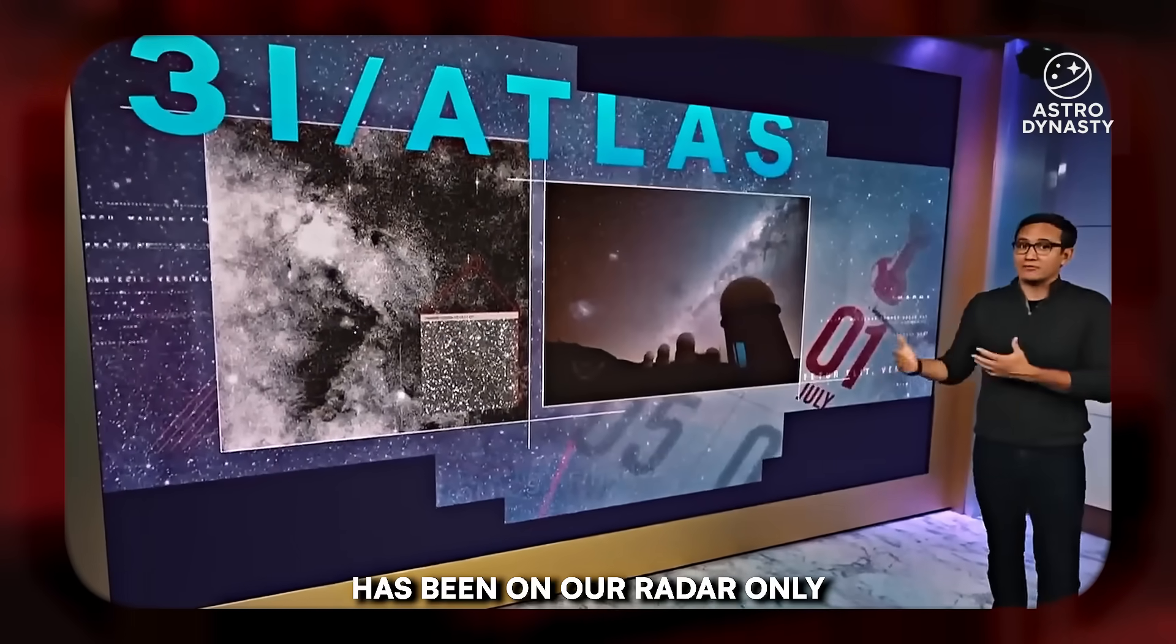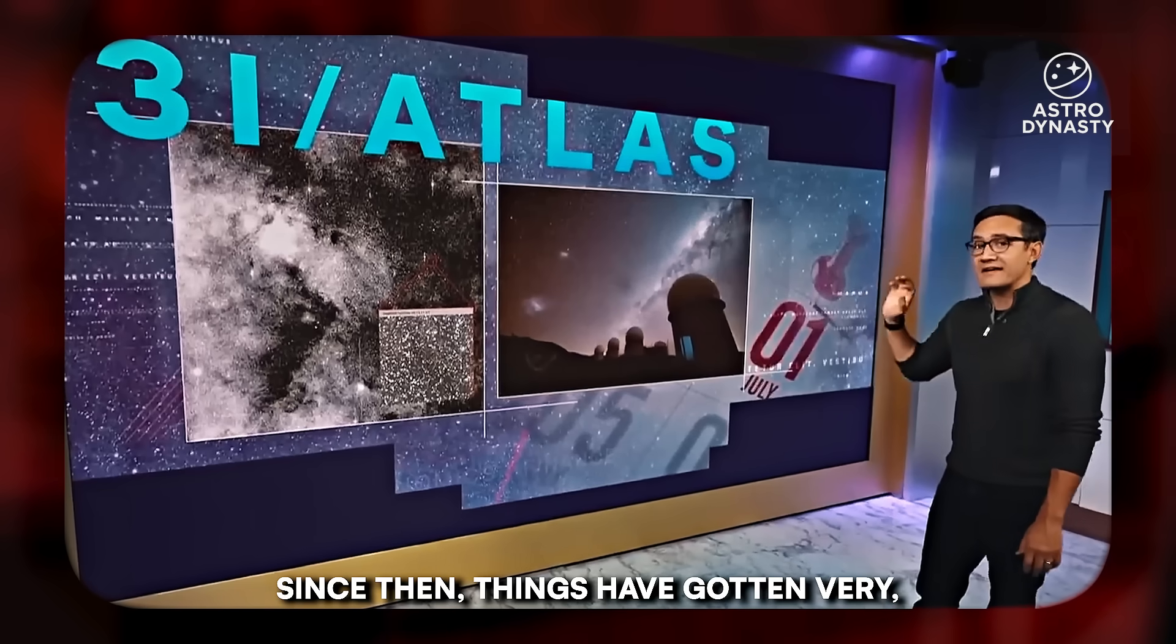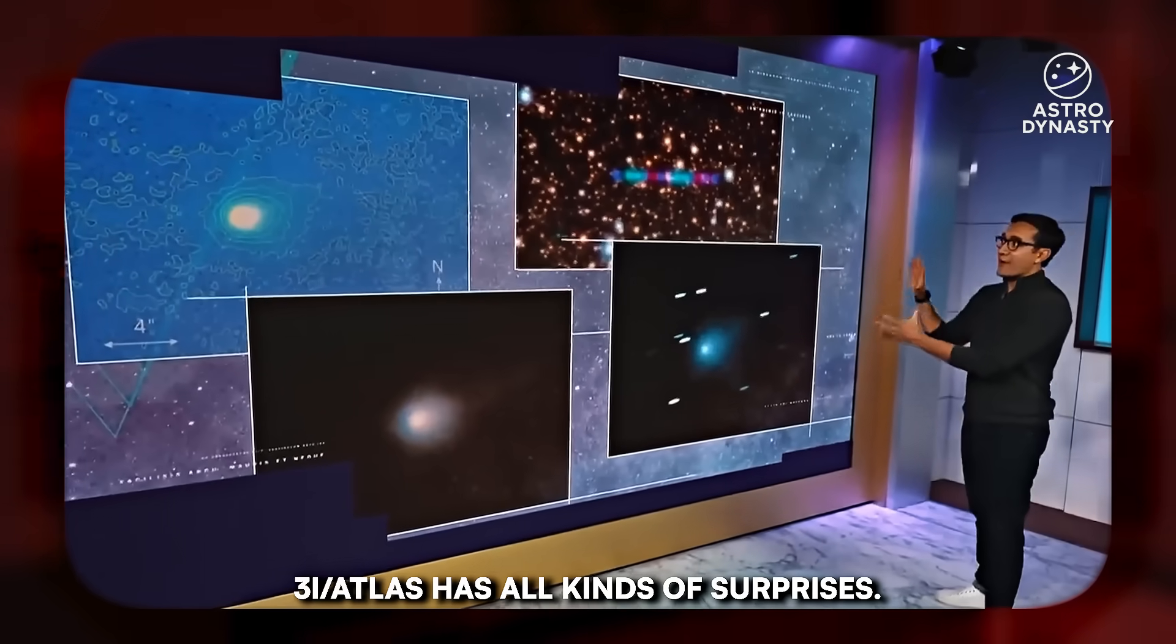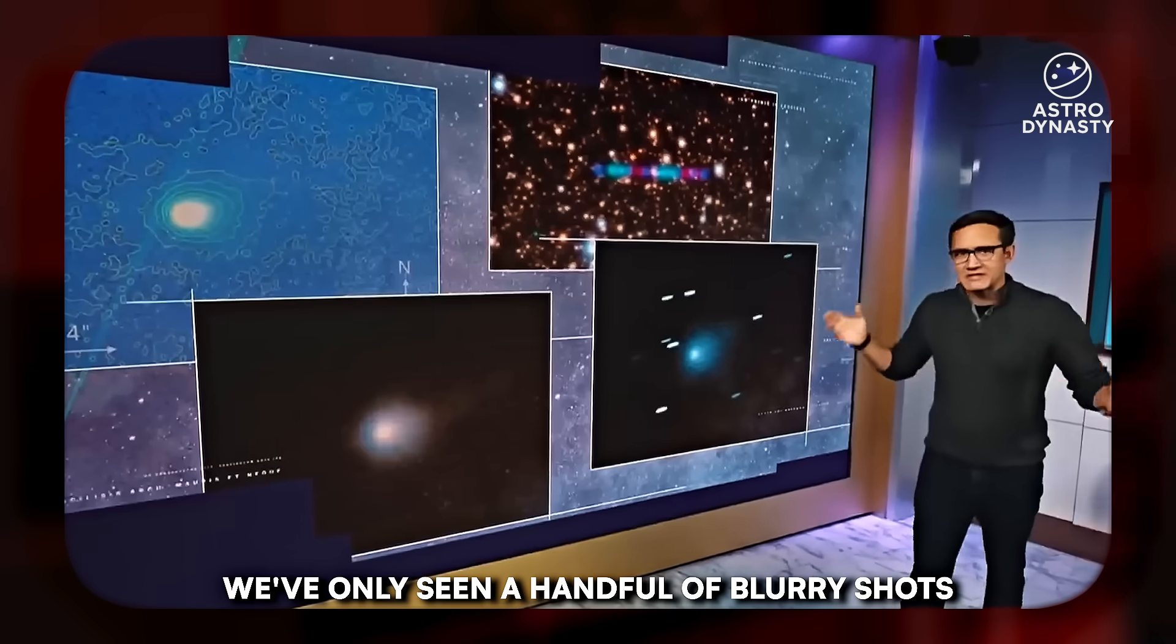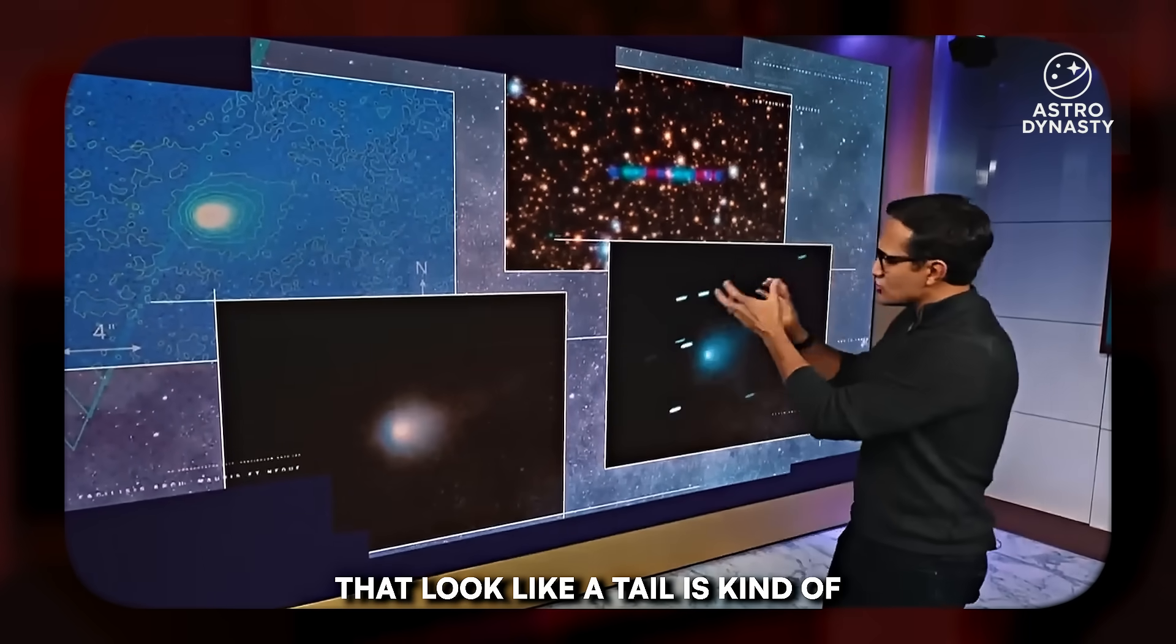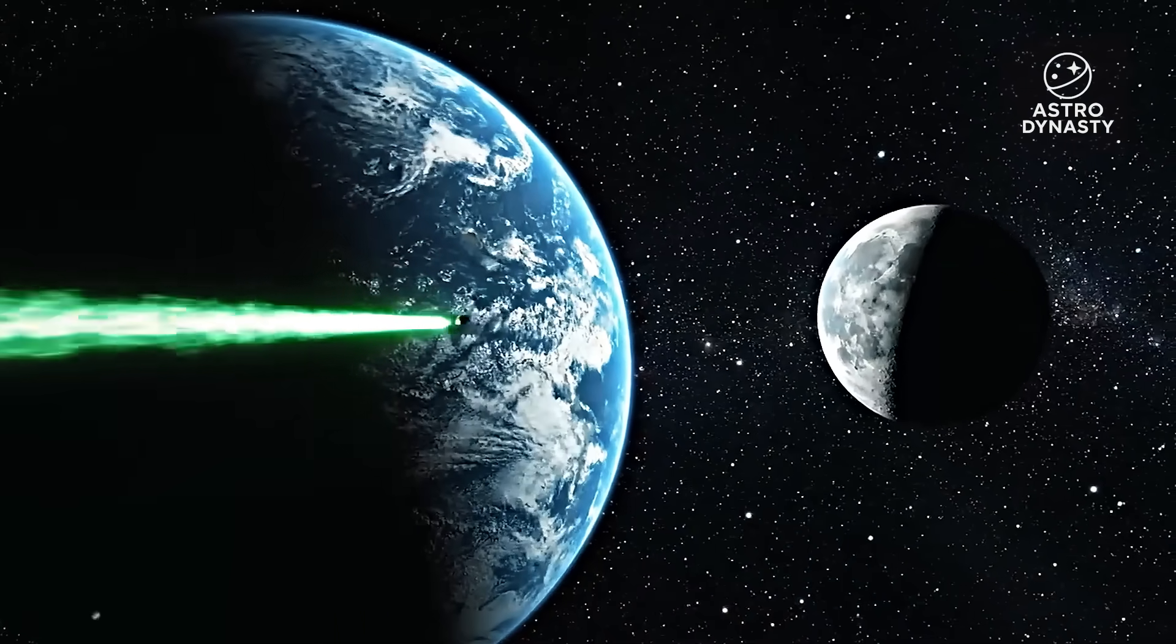Because this thing has been on our radar only for about a few months, since then things have gotten very interesting. According to astronomers, 3i Atlas has all kinds of surprises. We've only seen a handful of blurry shots that look like a tail is kind of starting to form.